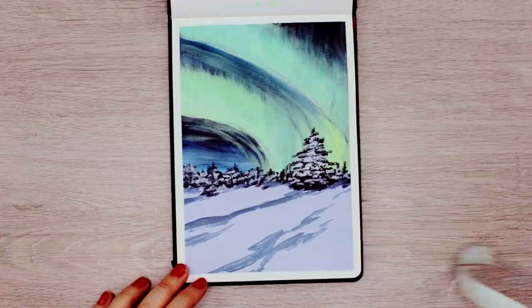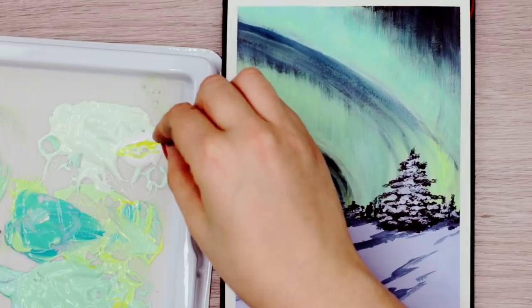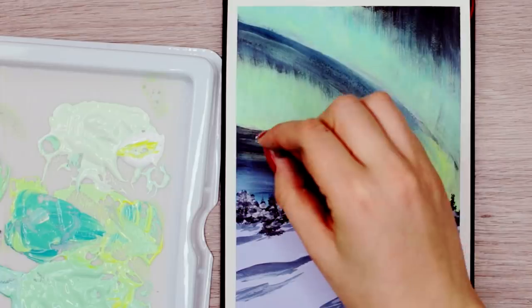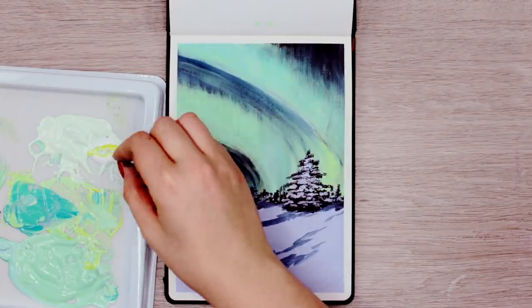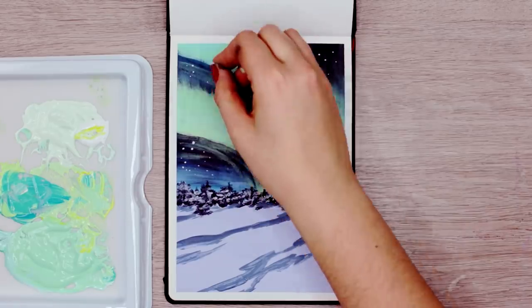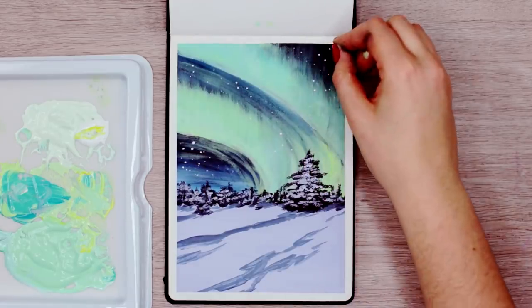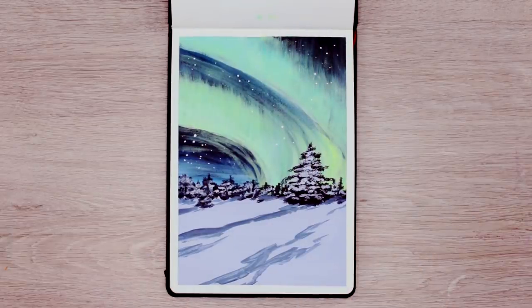Now, let's remove the tape and add a few last details. If you don't have a thin brush, you can use a paper clip and dip the tip into the white paint and use it as a dotting tool to apply a few stars to the sky here and there. This will add a really nice atmosphere to the painting.